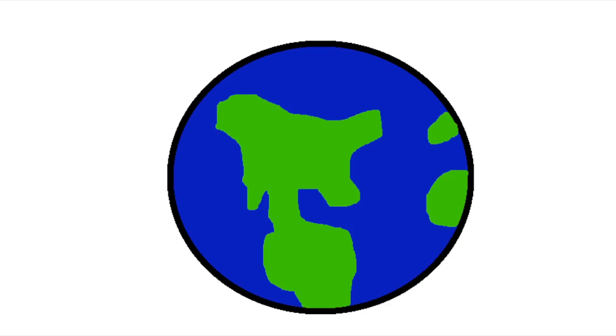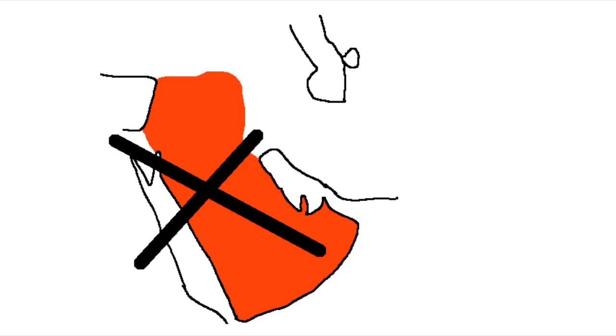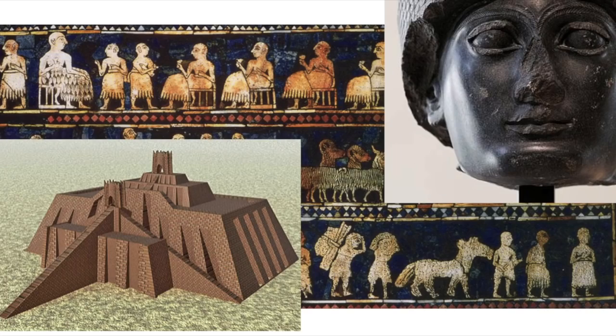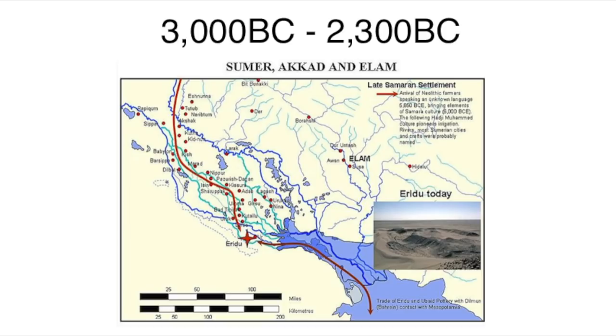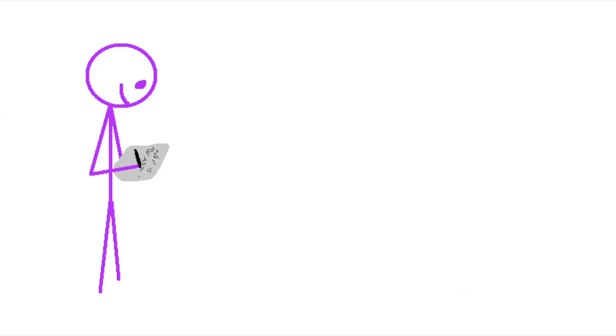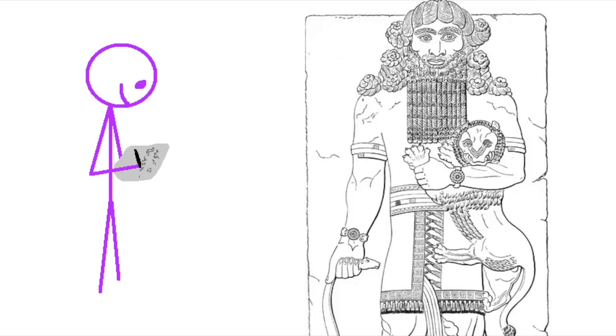However, the earliest language we actually have records of in Mesopotamia, or anywhere in the world for that matter, isn't Semitic or Afroasiatic at all. Rather, it's Sumerian, a language spoken in what is today southern Iraq that doesn't seem to be related to any other known language. The Sumerians were one of the earliest civilizations ever. Between 3000 BC and 2300 BC they had a complex society made up of a bunch of different city-states, a little like the ancient Greeks. They were the first people in the world to start writing down their history, and one of the things they wrote down was the story of Gilgamesh, which you might have heard of.